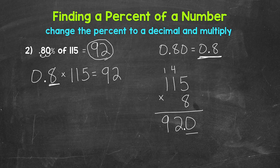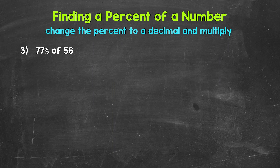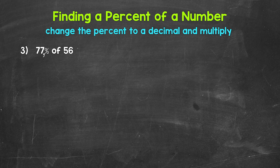Lastly, let's move on to number 3. We need to find 77% of 56. Let's change the percent to a decimal and multiply. Percent to decimal — we divide by 100, and we can do that by moving the decimal twice to the left. The decimal goes after a whole number, so right here for 77%. We move it once, twice to the left, and we get 0.77 — 77 hundredths. So we need to do 0.77 times 56.